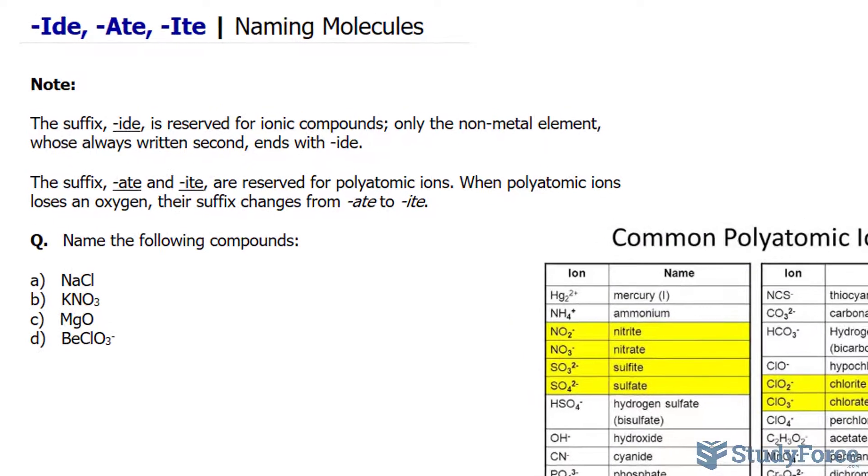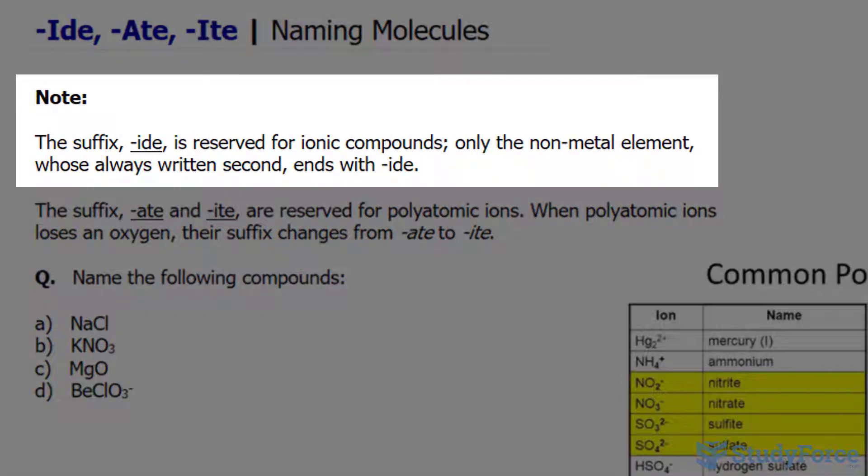Just a quick note before we start. The suffix -ide is reserved for ionic compounds. Remember, an ionic compound is one where you have a metal with a nonmetal, and only the nonmetal element, which is written second, ends with -ide. I'll show you some examples soon.